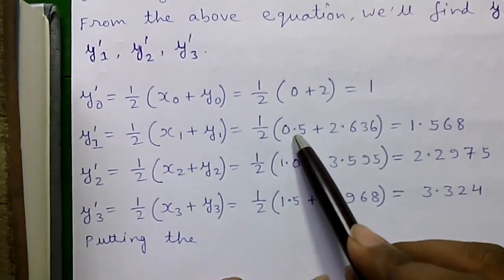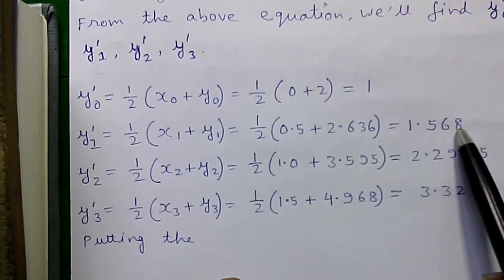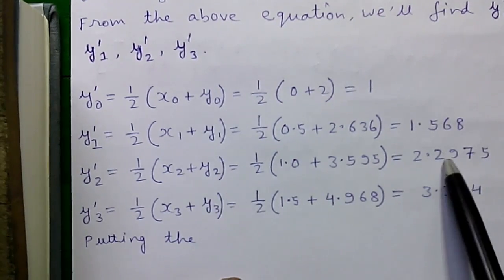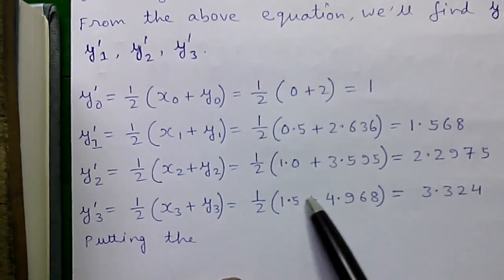For y dash 1 we will use x1 and y1 values. So, x1 is 0.5, y1 is 2.636. So, that will become 1.568. Similarly, by putting x2, y2 we will get y dash 2 value and x3, y3 we will get y dash 3 value.